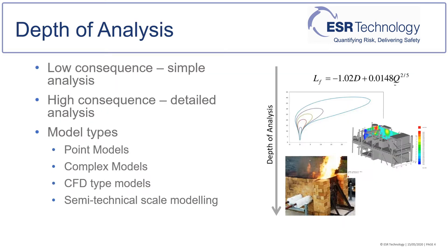The depth of analysis required for consequences generally depends on the degree of harm. Initially a screening model may be used to get an idea of the scale of the consequences and to determine whether detailed analysis will be required. This may take the form of a simple equation or point model.